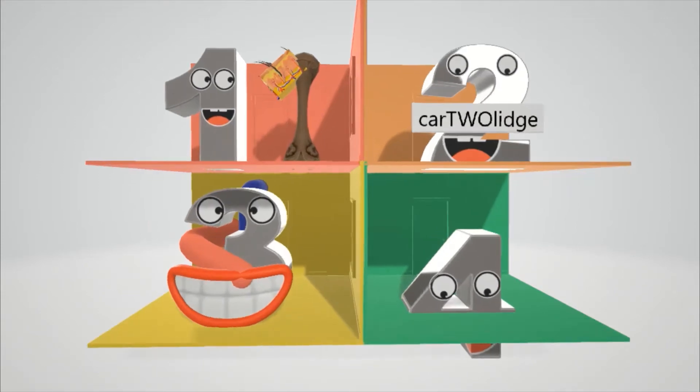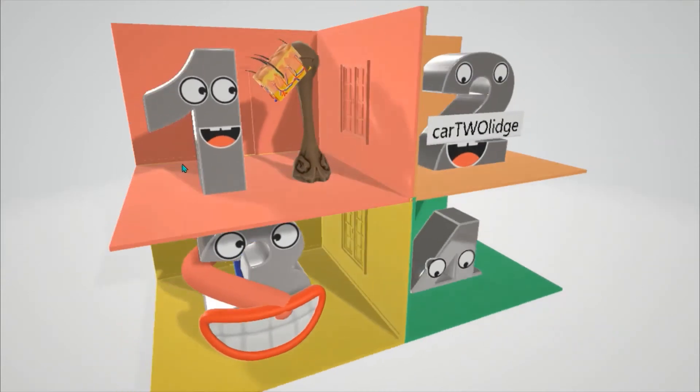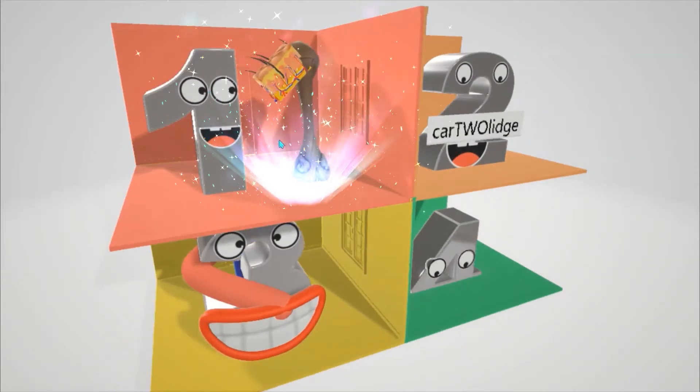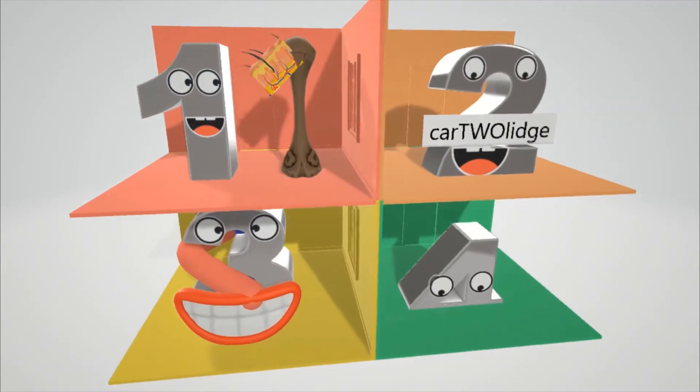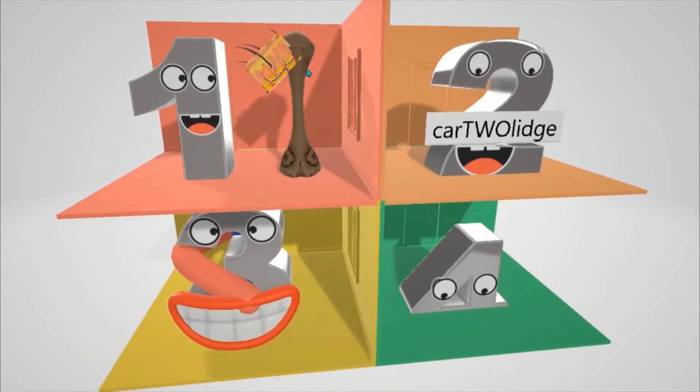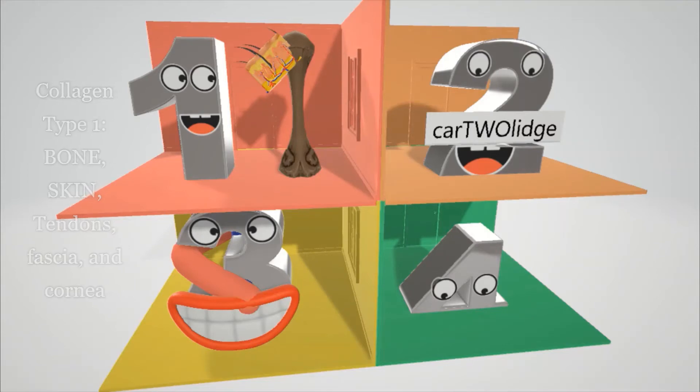So collagen, we're talking about the first four types over here. So we have collagen type 1 that's over here. Now this one is really exciting because we found a friend over here. And this friend looks just like him. This like him right over here. This guy. This is a bone and skin because collagen type 1 is found in bone and in skin. It will similarly be found in the tendons and the fascia as well as in the cornea.